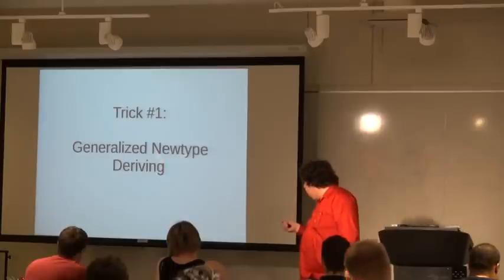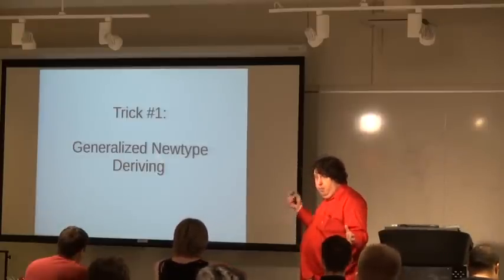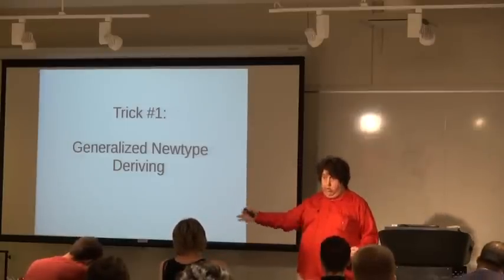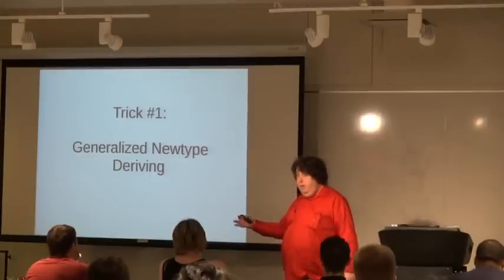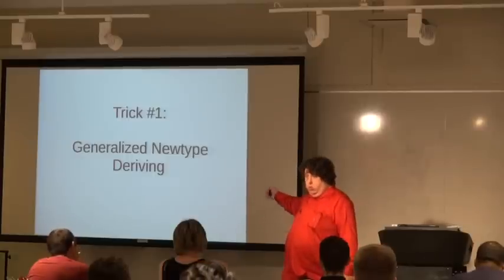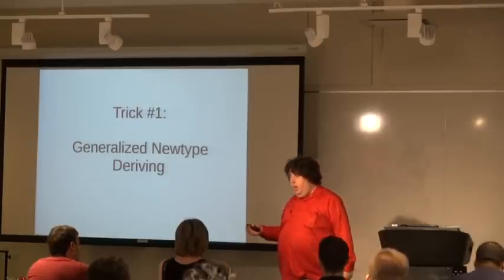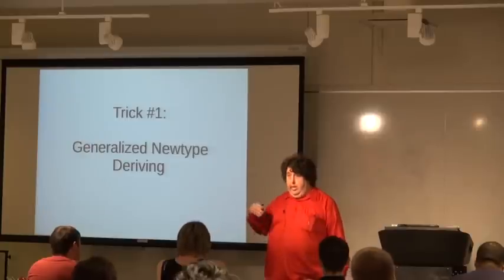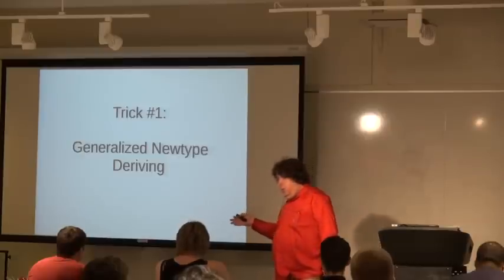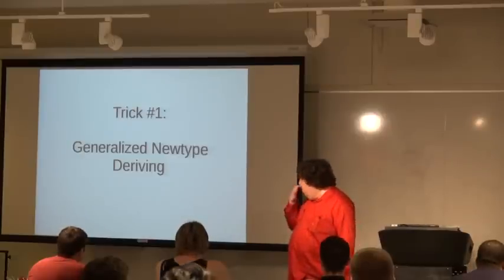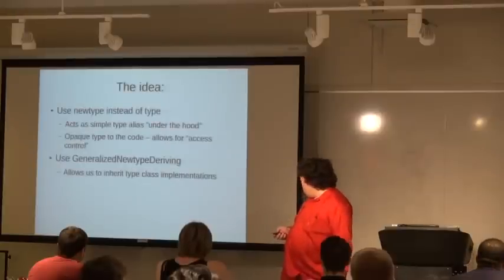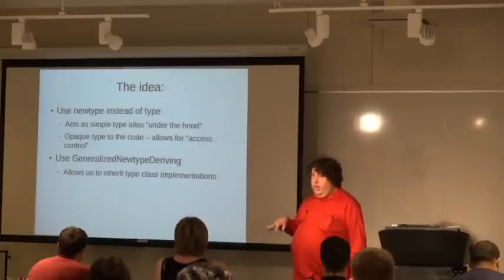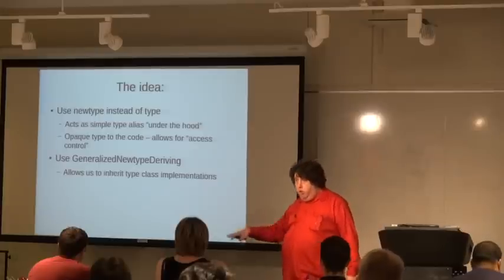I didn't understand until I learned this why you have newtype. You have data, which defines a new type with new constructors; you have type, which is like a C typedef — a type synonym. But newtype is neither fish nor fowl. What newtype does is allow you to define what looks like a new data constructor, but under the hood it's simply a type alias.